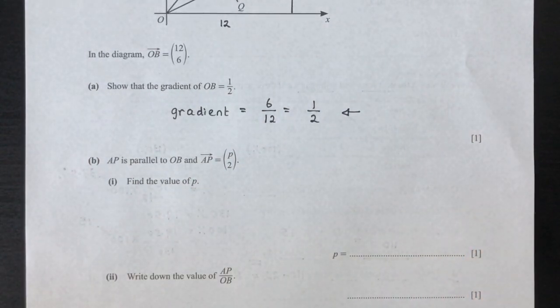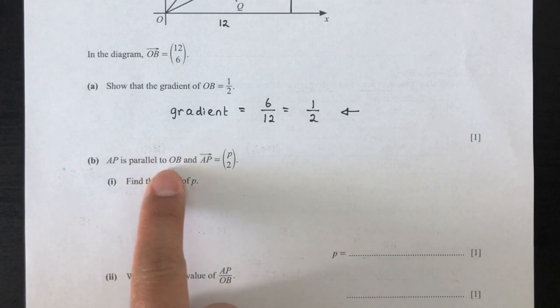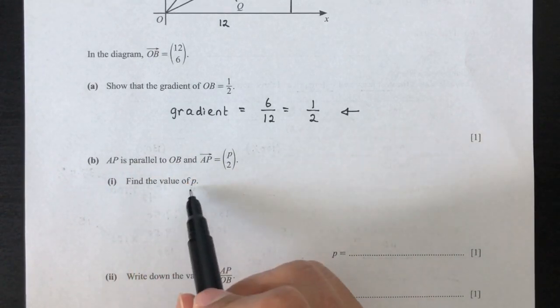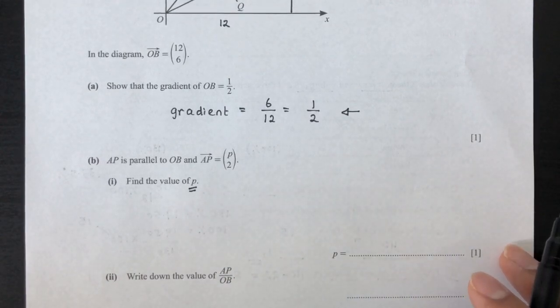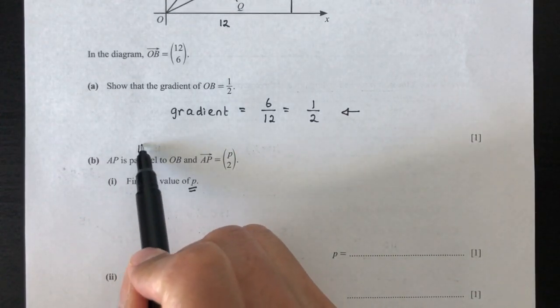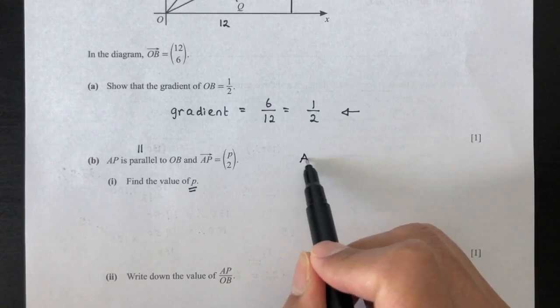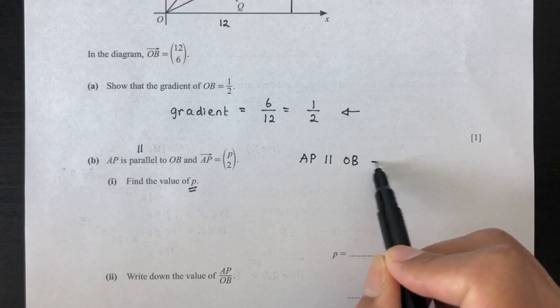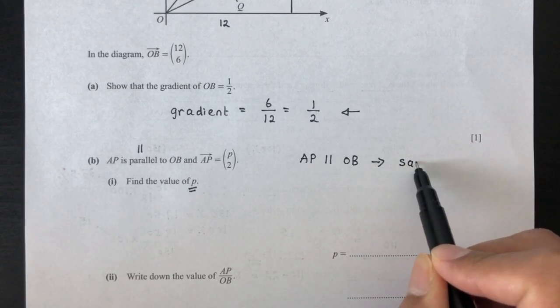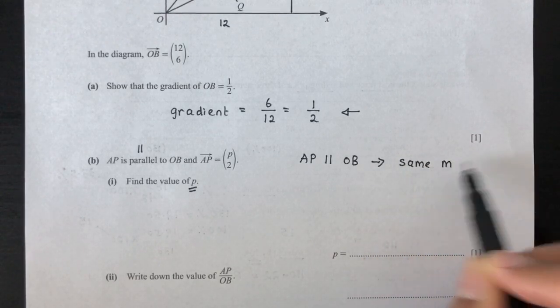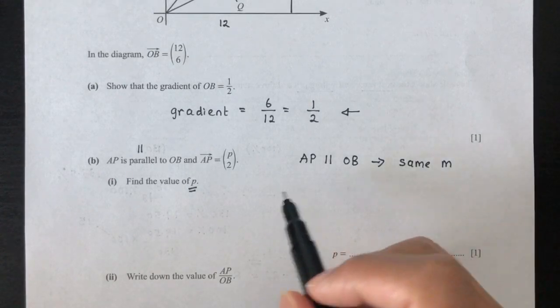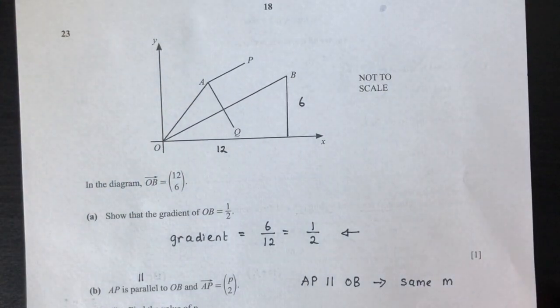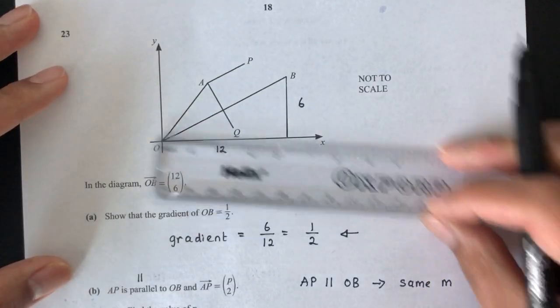Now for part B, we have AP is parallel to OB, and AP equal to this, find the value of P. So what does this mean? So AP is parallel to OB, so from this, we have to understand that when a line is parallel to the other line, it means that they have the same gradient. Same M, which is the same gradient. So AP has the same gradient. So let's draw something here so we can understand.